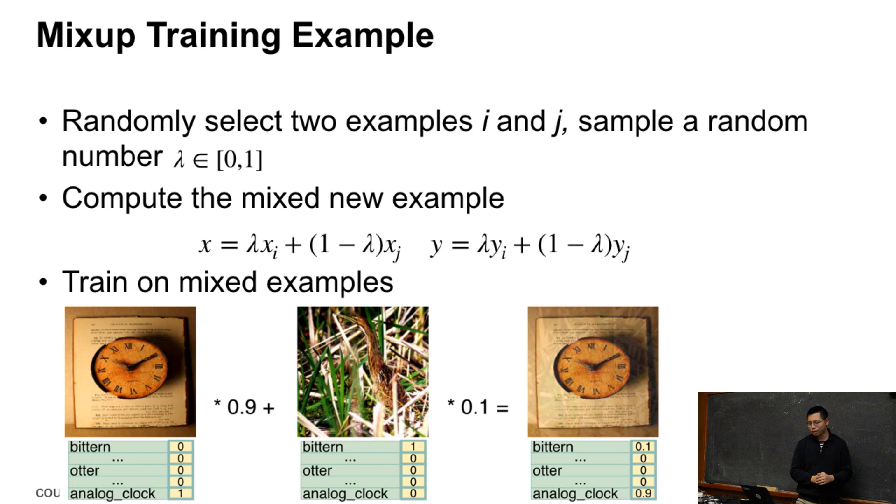What I'm doing here, every time I randomly select two examples, the i-th example and j-th example, and then I'm going to sample random numbers lambda from 0 and 1. I will mix these two sample examples together to get a new example, so lambda times xi plus 1 minus lambda times xj. Similar thing for the labels. For the training, we only train on these mixed examples.